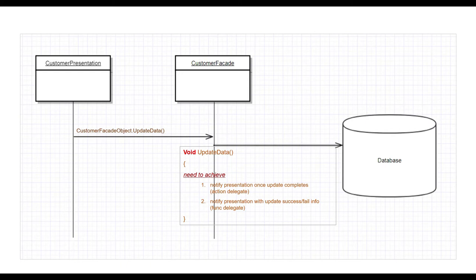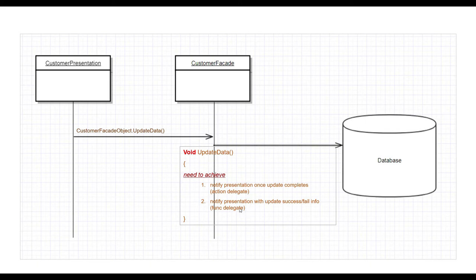To explain Action and Func delegates, I have two classes: CustomerPresentation, which is a UI layer class, and CustomerFacade. The CustomerPresentation class calls a void method UpdateData in CustomerFacade. UpdateData does some long operation and updates data in the database. The presentation developer has two requests: first, notify presentation once update completes without returning any value — we can use Action delegate here. Second, notify presentation with update success or fail, and depending on that, presentation wants to return some data back to facade for further processing — we can achieve this using Func.